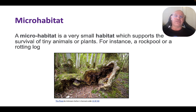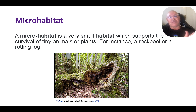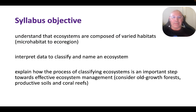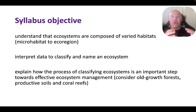First, let's look at this terminology. What's a microhabitat? Remember, habitat is where organisms live. A microhabitat is a very small habitat, or a part of a habitat, which supports the survival of small organisms — it might be a rock pool, a rotting log, that sort of thing. This syllabus objective is really about understanding that ecosystems are composed of lots of different micro parts, like microhabitats within a habitat, all the way through to ecosystems and then eco-regions.